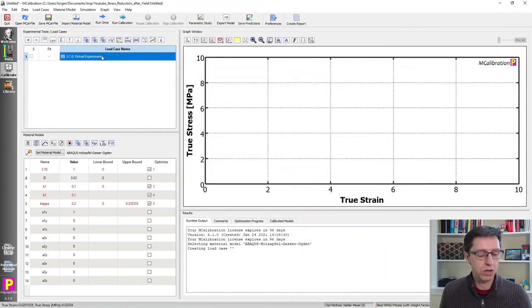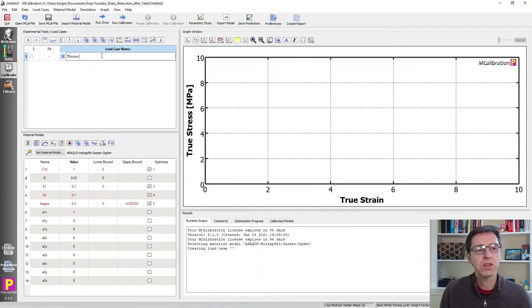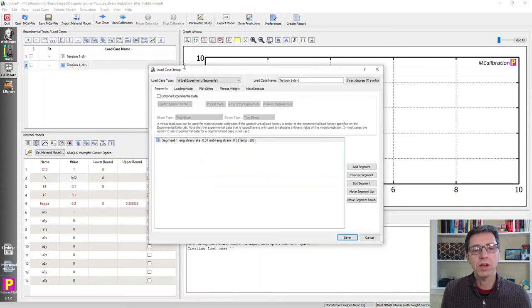And I'm going to call this tension in the one direction. And then I'm going to duplicate this test case. I'm going to create a tension in the two direction. So I'm going to simulate tension in two orthogonal directions, so we can see if the response is isotropic or anisotropic.